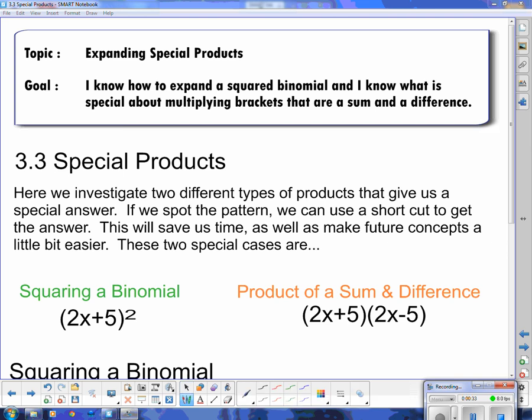It's the case where we're squaring a binomial. It's where I have a binomial in brackets and there's a squared on it. And the other case is when I have two brackets that are multiplied by themselves except that the sign in the bracket is different. Everything else is the same but the sign is different and so we call that the product of a sum, sum meaning plus, and difference, difference meaning minus.